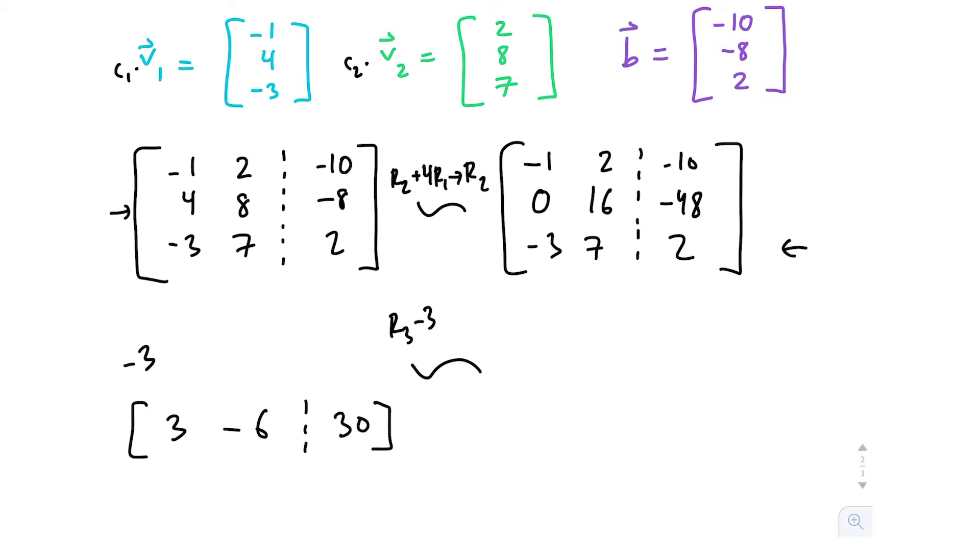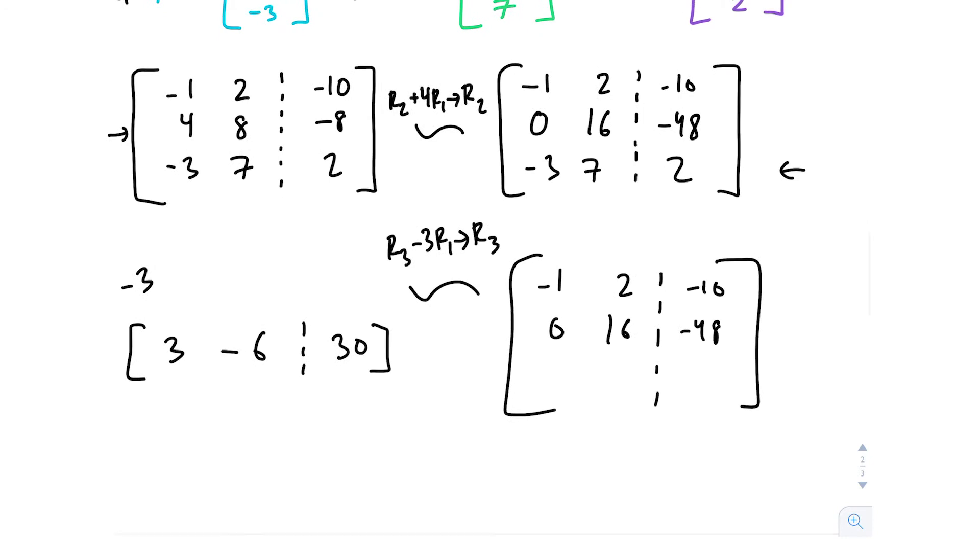Then our row operation is R3 minus 3R1 and put that back into R3. Just like before, we're not changing R1, 0, 16, negative 48. But then we're going to be adding this row and this row, so negative 3 plus 3 is 0, negative 6 and 7 is 1, 30 and 2 is 32.